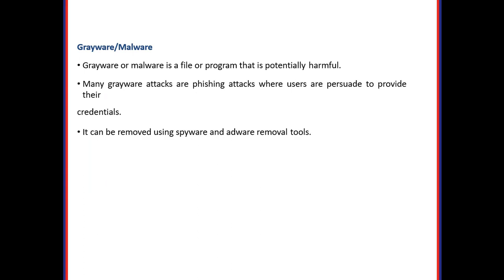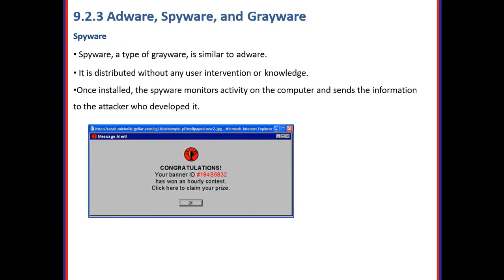Next is Grayware or Malware. Grayware or malware is a file or program that is potentially harmful. Many grayware attacks are phishing attacks where users are persuaded to provide their credentials. It can be removed using spyware and adware removal tools. Spyware is similar to adware but is distributed without the user's knowledge. Spyware monitors activity on the computer and sends the information to the attacker. Once a user clicks a deceptive ad, spyware installs in the background and monitors browsing history, sending it to the attacker.